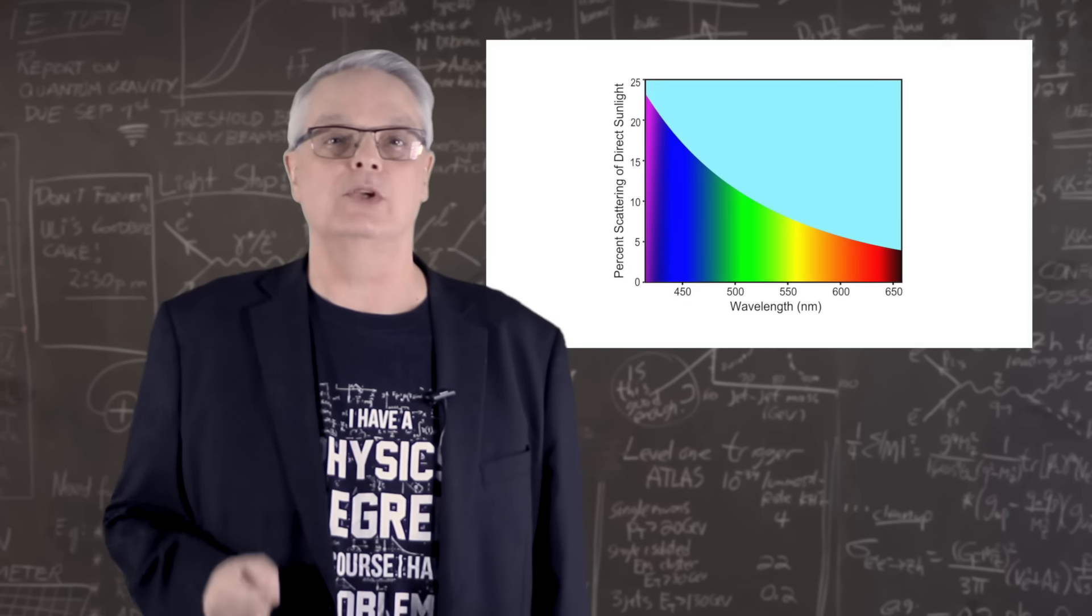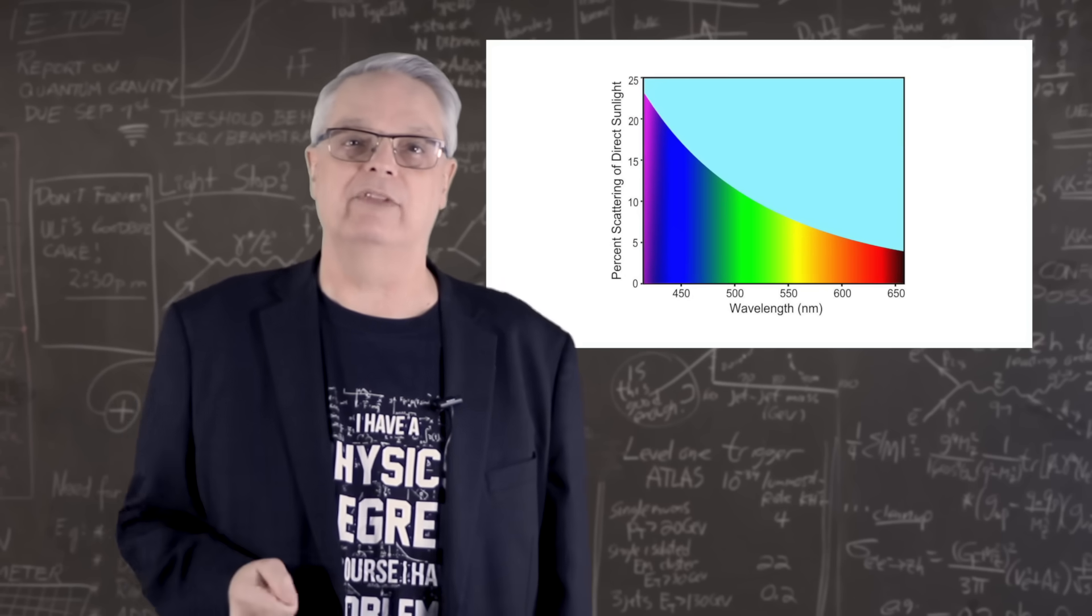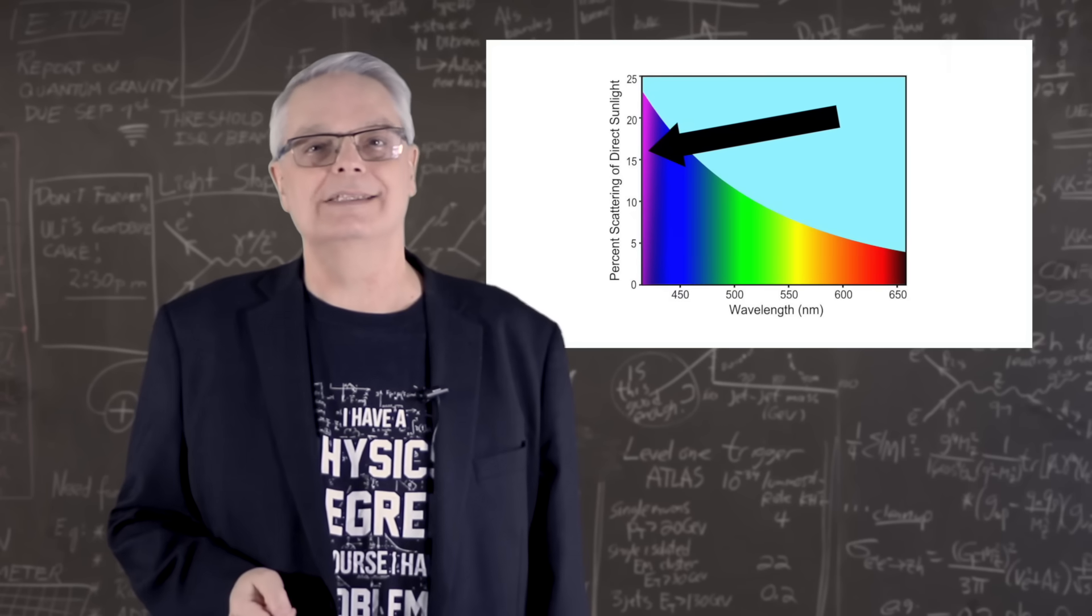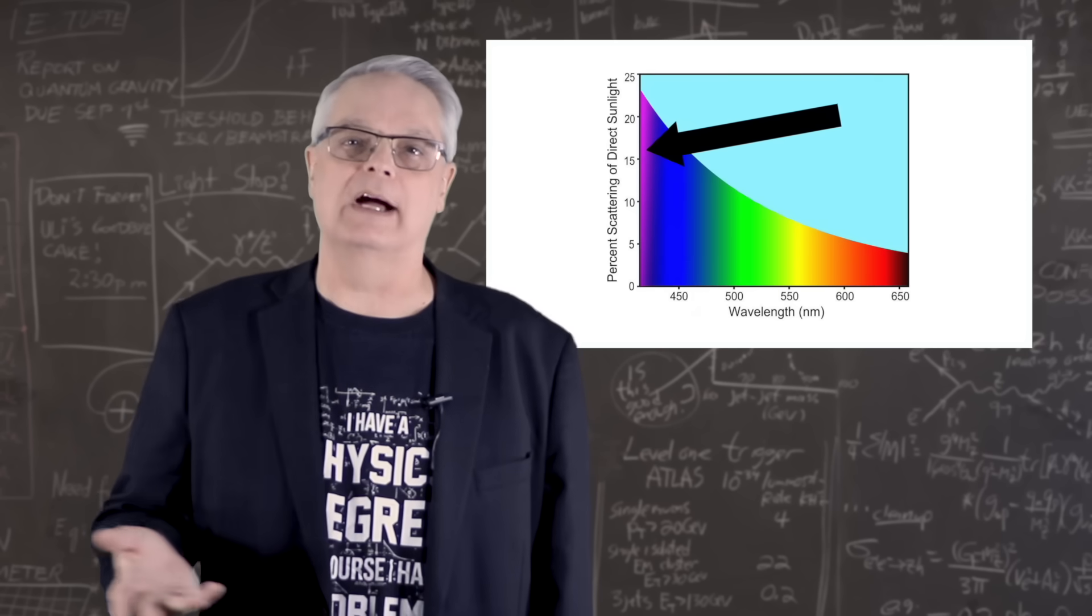Now, if you are listening closely, you probably have a question. I said that air scatters short wavelengths with violet being scattered the most. So why isn't the sky violet or some shade of purple? That's where the human eye comes into play.